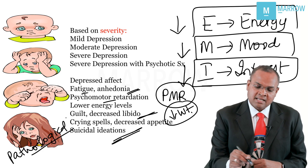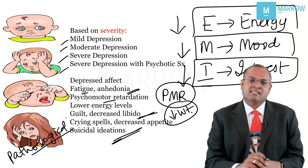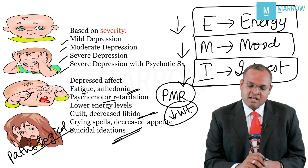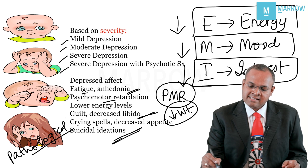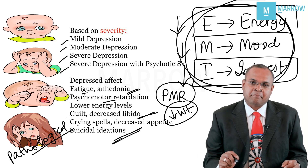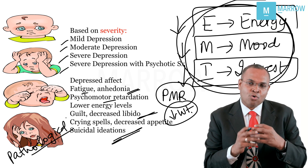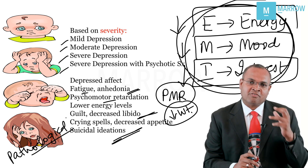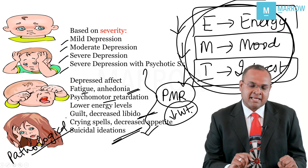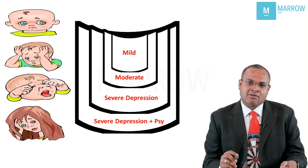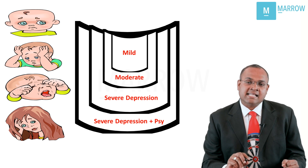There are different levels of depression: mild depression, moderate depression, severe depression, and severe depression with psychotic symptoms. To consider a diagnosis of depression, at least two out of the three core features — low energy, low mood, and decreased interest — should be present. These are core features, and the rest can be any of the additional symptoms depending on the intensity of the problem.